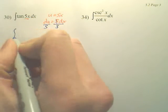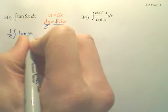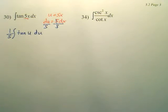So it looks like we're going to end up with the integral of 1/5 tangent u du. Okay. And then from there, we look at our chart. To do tangent, you look at your chart.